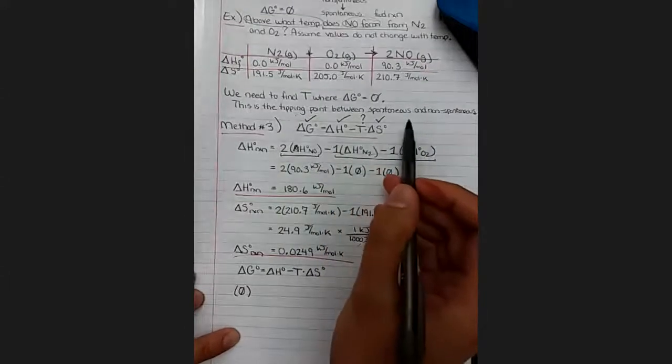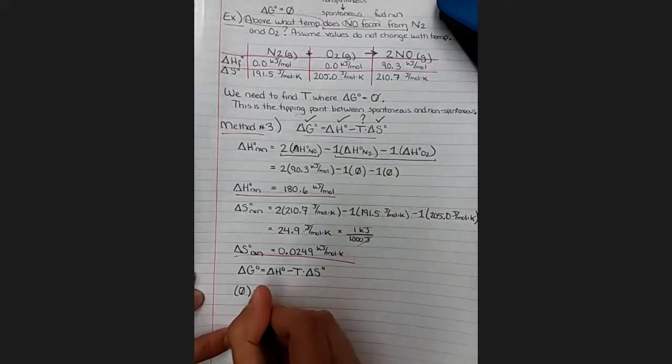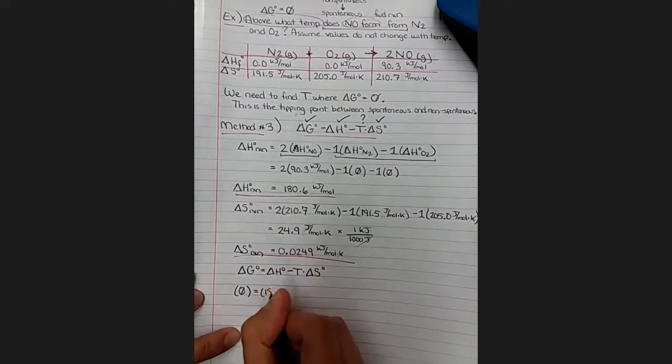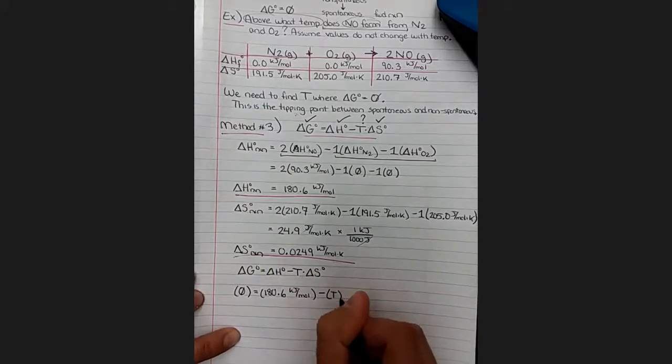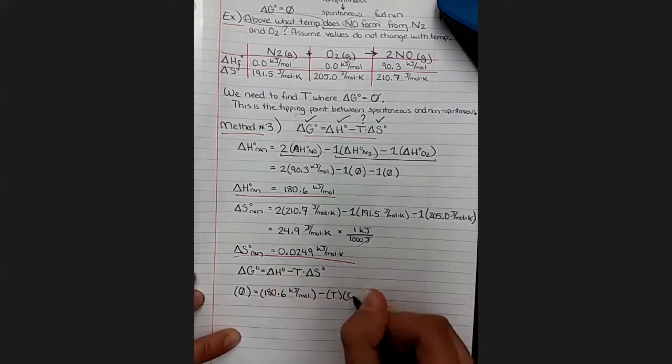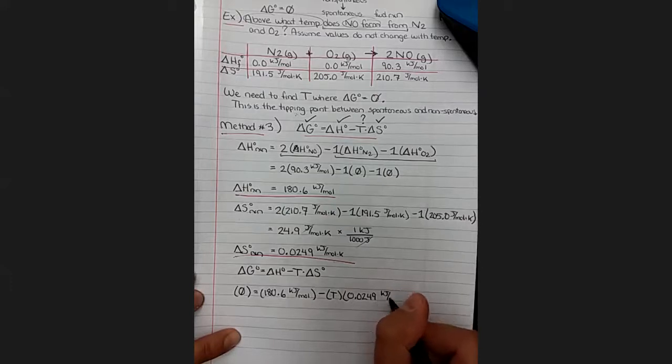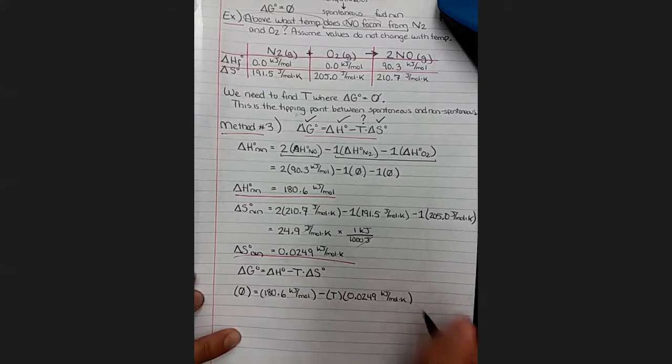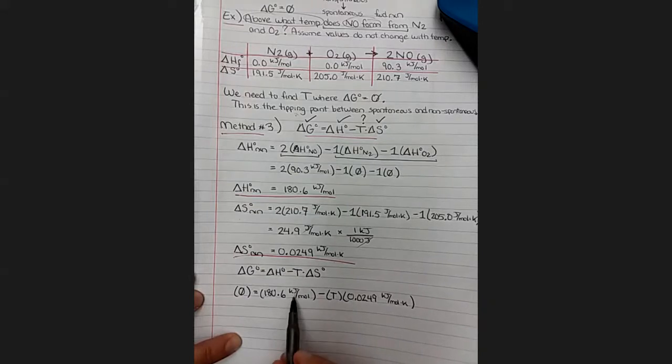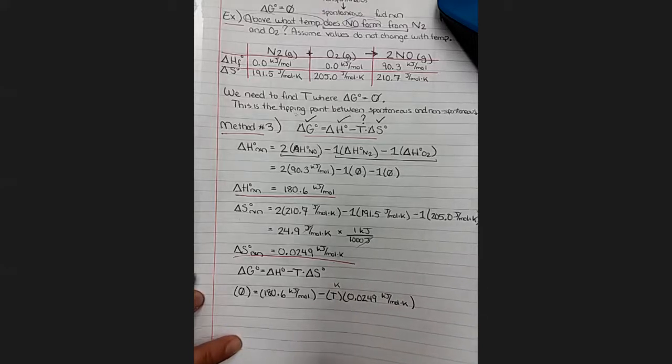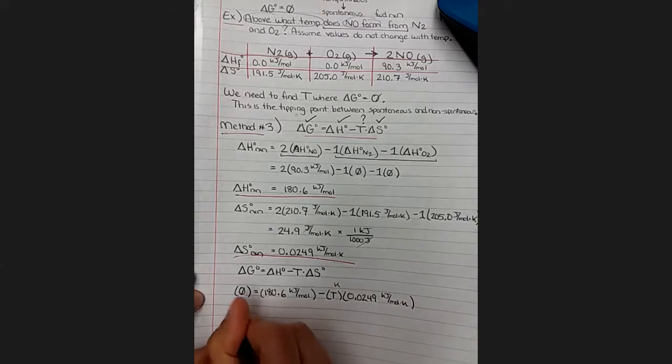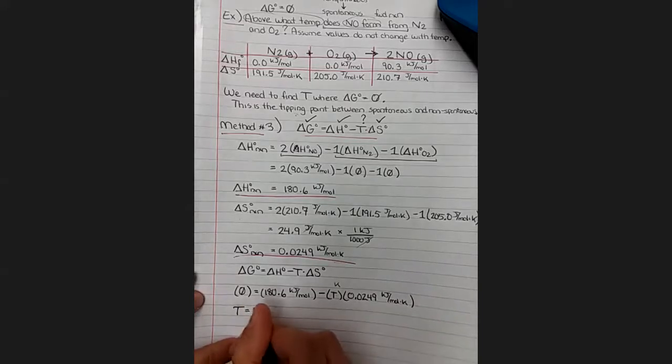Our value for delta H standard is 180.6 kilojoules per mole. We are trying to solve for the temperature and our delta S value is 0.0249 kilojoules per mole kelvin. So the units look good: this is going to be kilojoules per mole and if the temperature is in kelvin this whole term will be kilojoules per mole. So we're set. Do a little rearranging, plug it into the calculator and we end up with